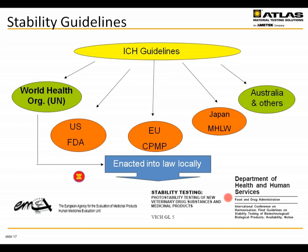Just because there are three central member states — the EU, the U.S., and Japan — does not mean other countries do not follow ICH guidelines. The World Health Organization has largely adopted most of the ICH guidelines as well. Countries that follow WHO guidelines also indirectly follow the ICH guidelines. Other member nations such as Australia and others have also adopted these, and organizations such as the veterinary ICH have also followed the ICH guidelines.